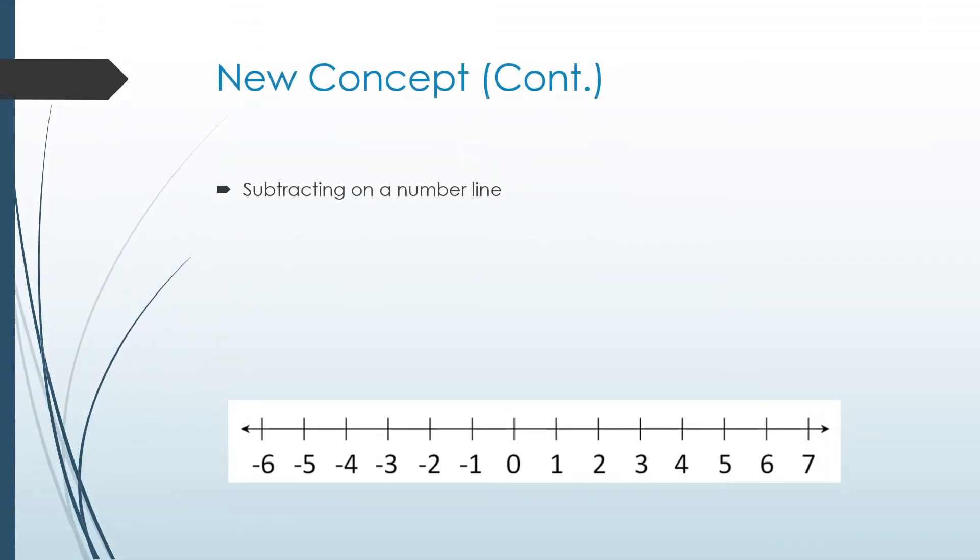Okay. So your book has an interesting way of showing subtraction on a number line. You probably won't use it all that often, but let's go through it just in case you see it again in your book. So the way they show you to do this on a number line is, remember zero is the origin, so we always start at zero.